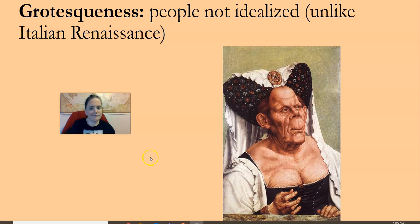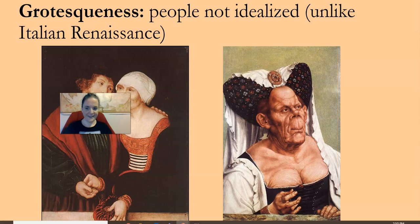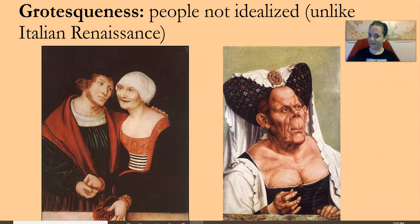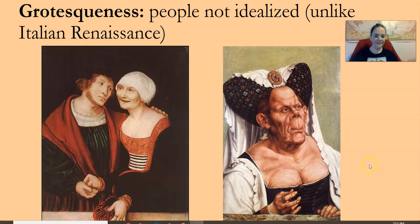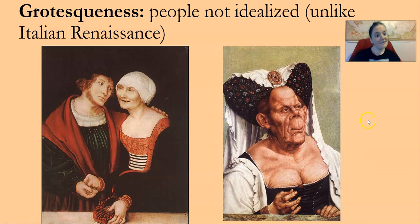Unlike the Italian Renaissance, things don't have to be specifically idealized, but they should be interesting to look at. Here is another example of a grotesquerie. We see these unidealized people — the sparse chin-strap beard, the missing teeth, the crooked fingers. Some of the paintings that we'll give you to analyze include that.